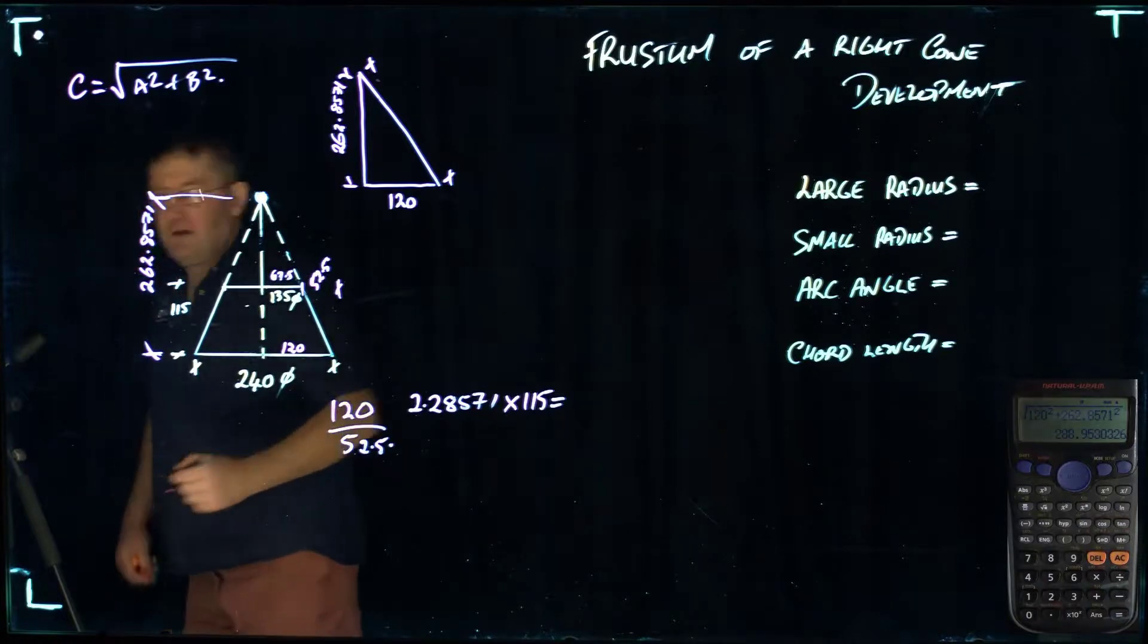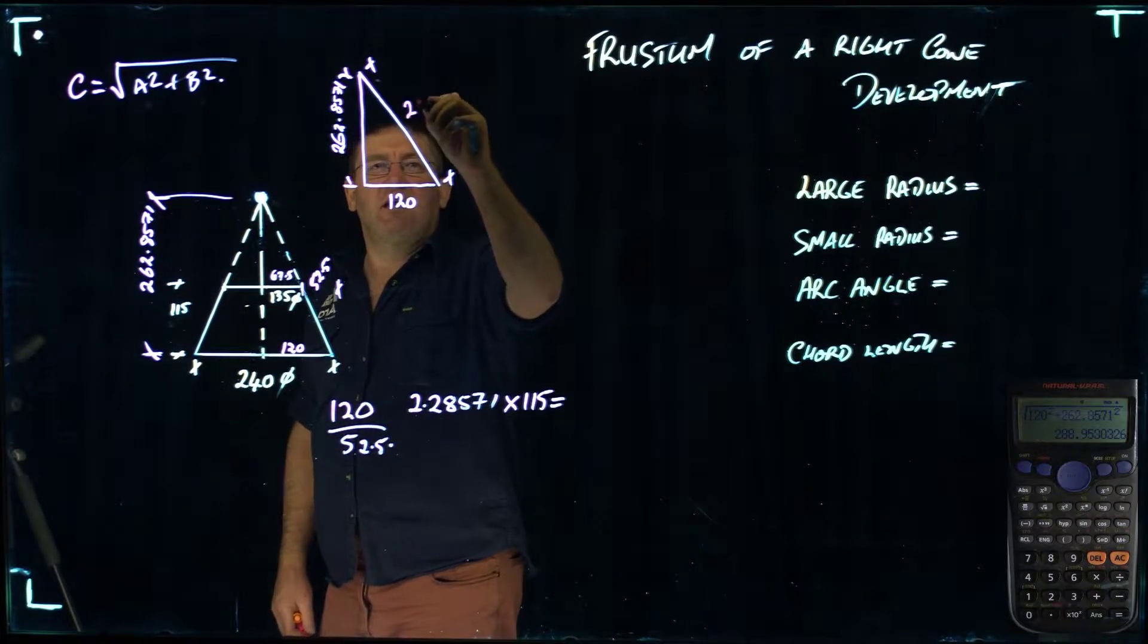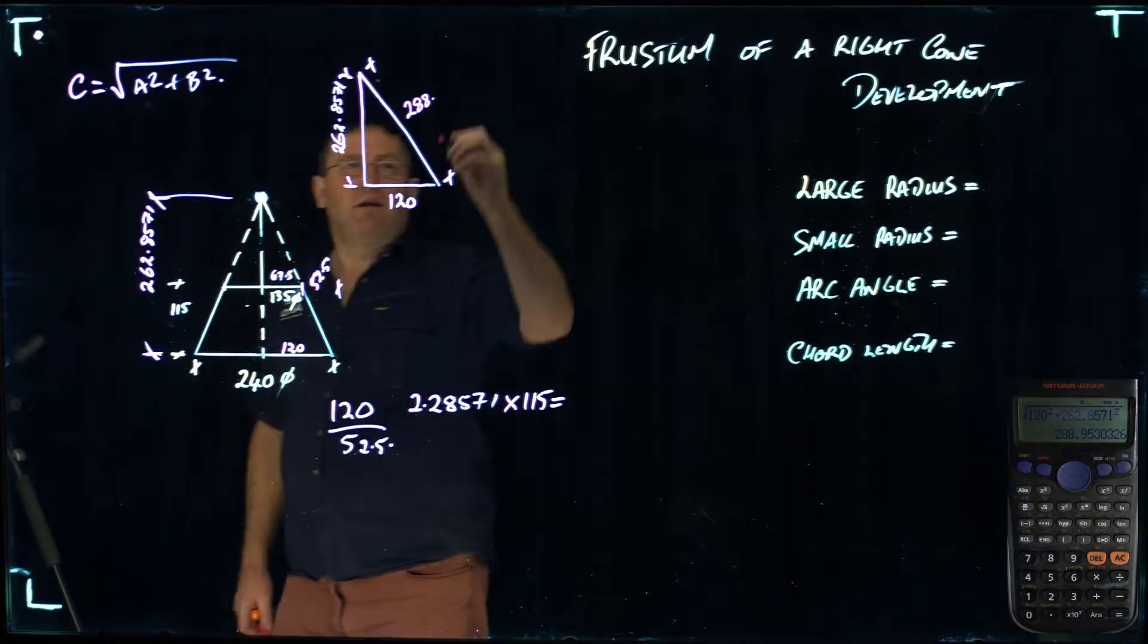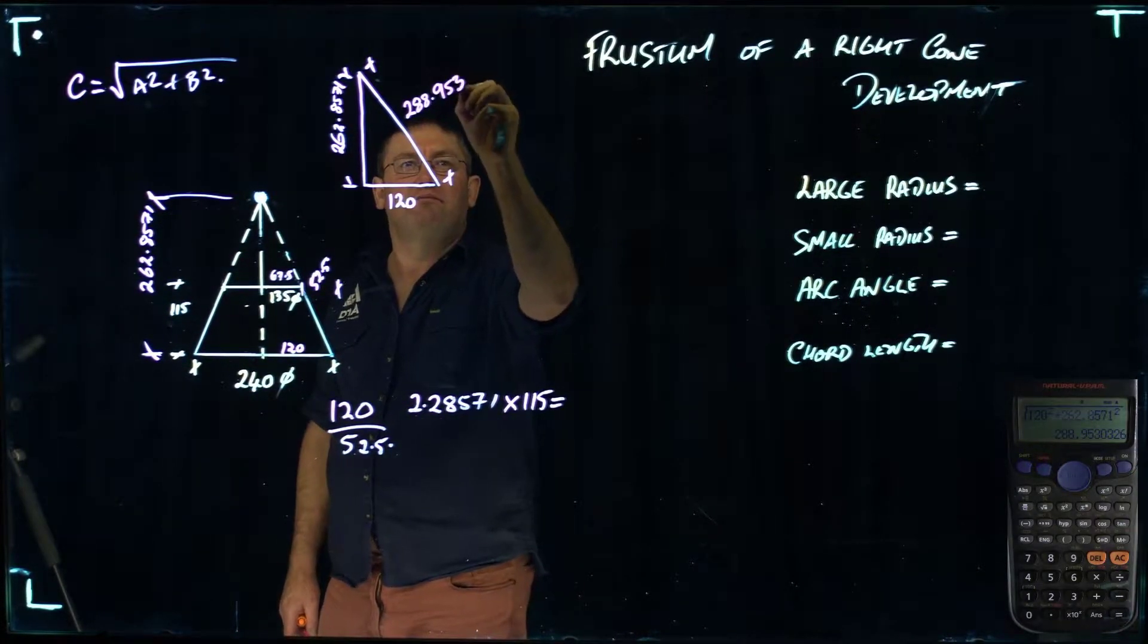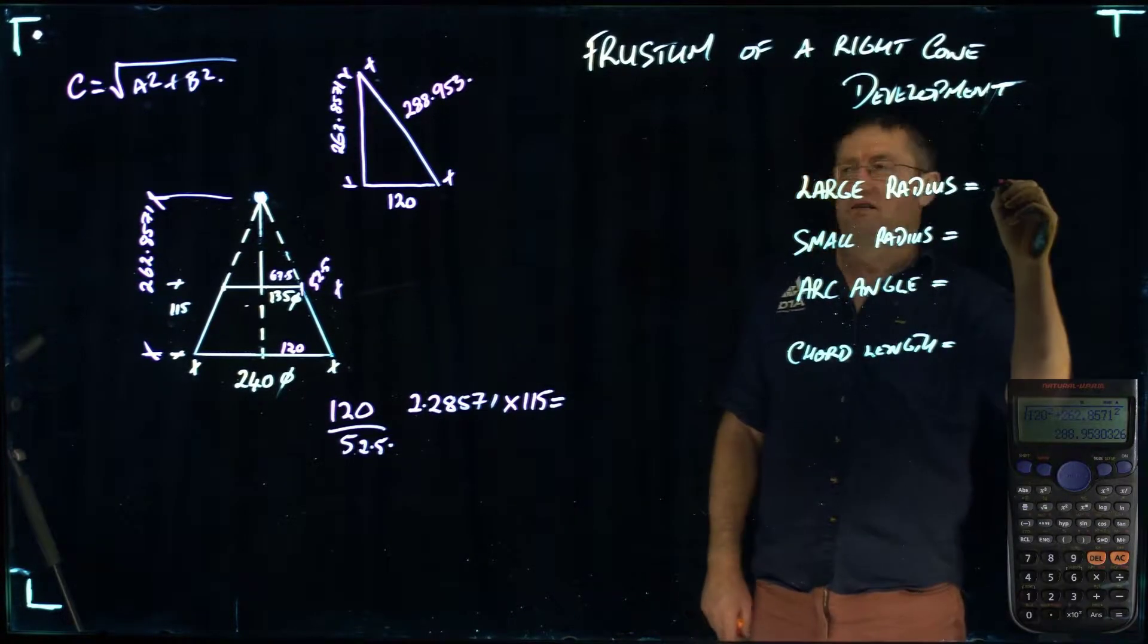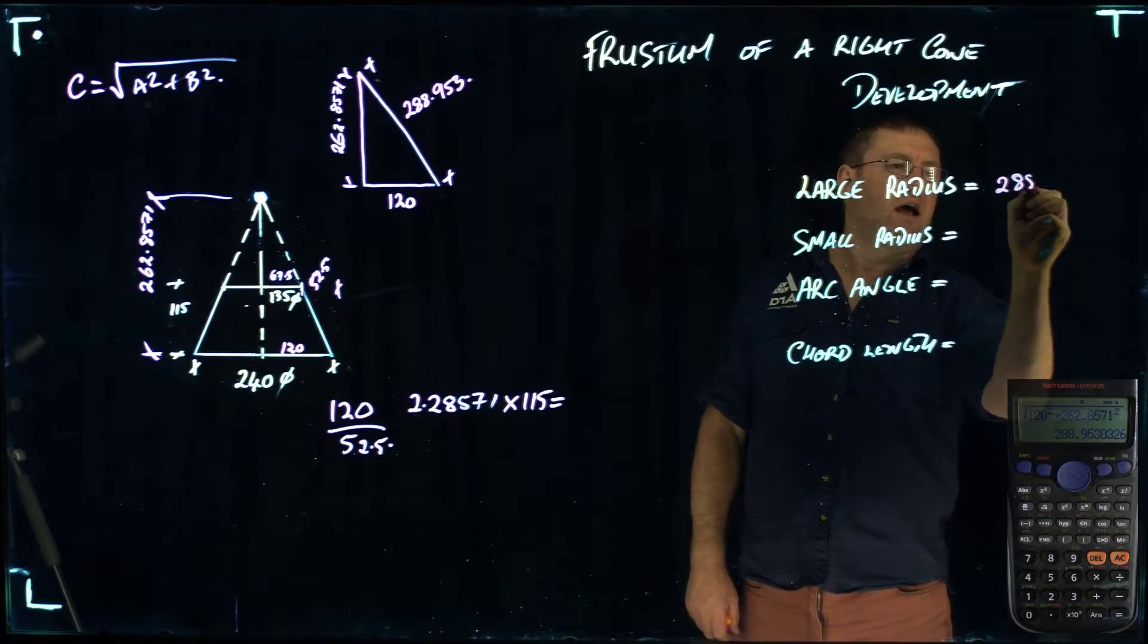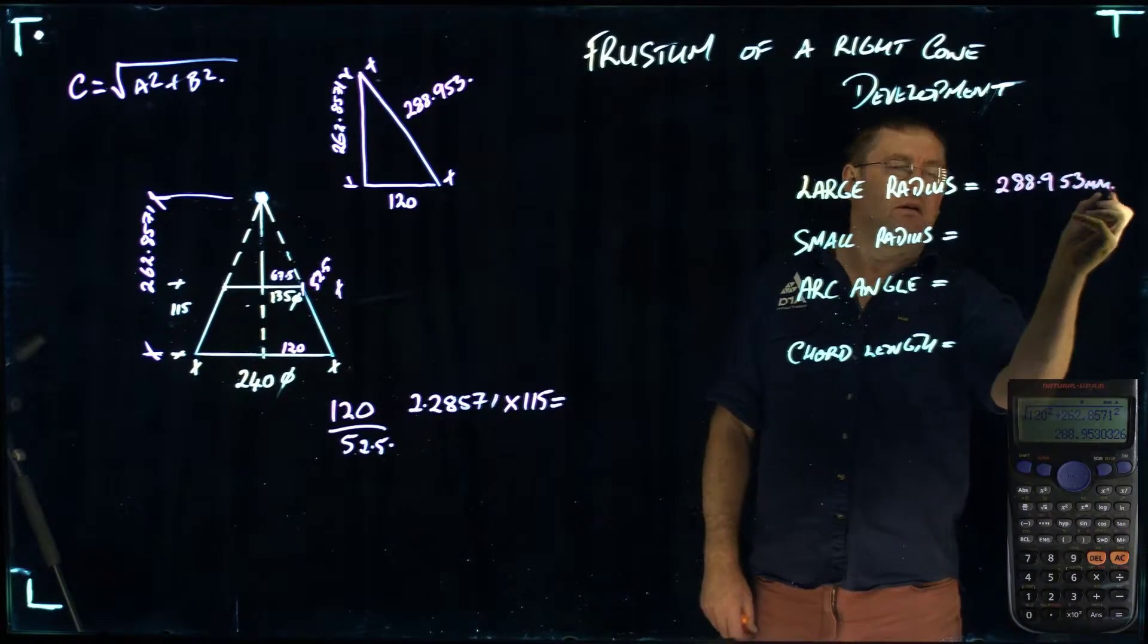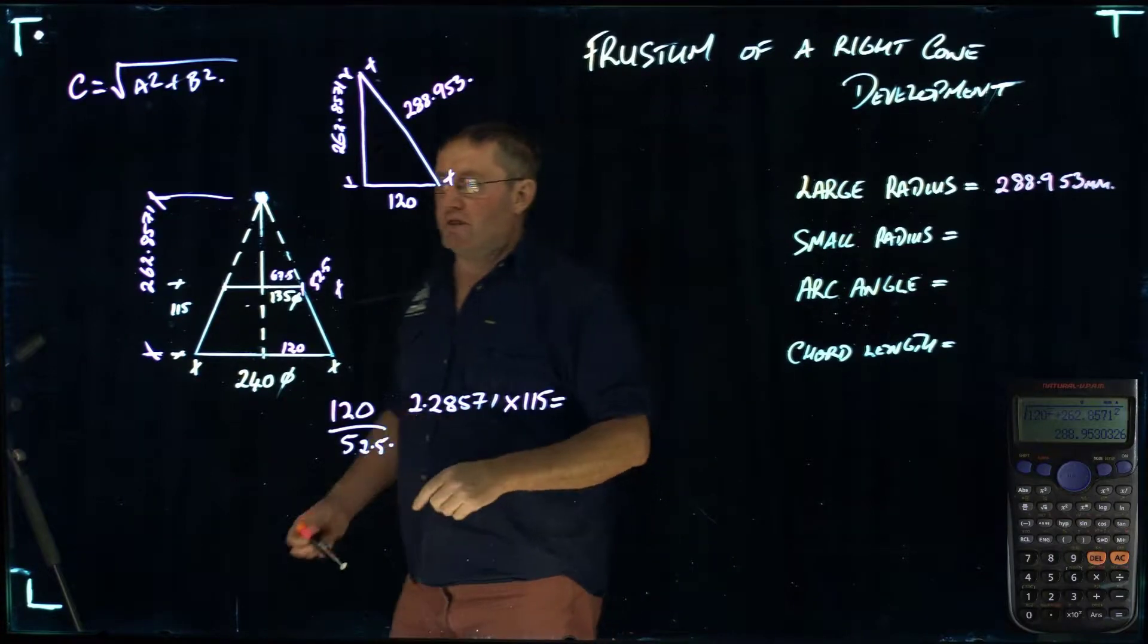Push the equal sign, and that gives me a length here of 288.953. So that is going to be my large radius. 288.953, and that's millimeters.